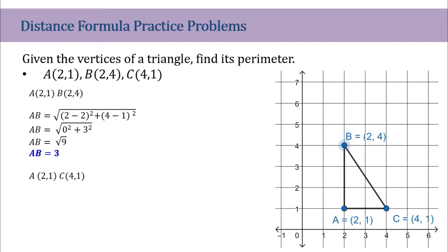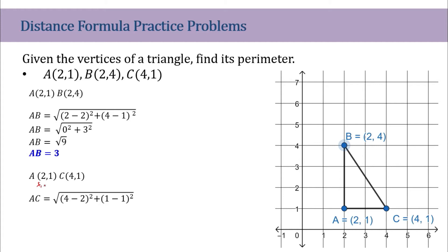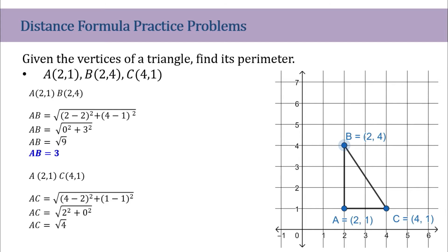Now for AC — this is a horizontal distance, so we use the distance formula. We assign x sub 1, y sub 1, x sub 2, y sub 2. So x sub 2 minus x sub 1 is 4 minus 2, and y sub 2 minus y sub 1 is 1 minus 1. That gives us 2 squared plus 0 squared. AC is equal to the square root of 4, which is 2.